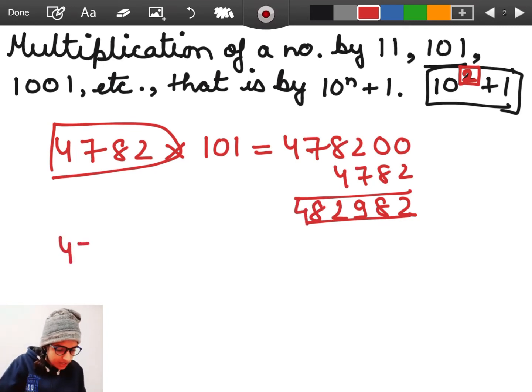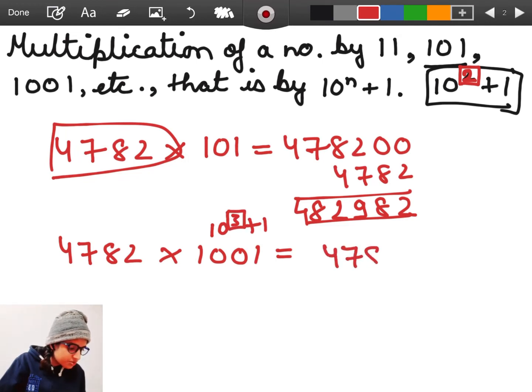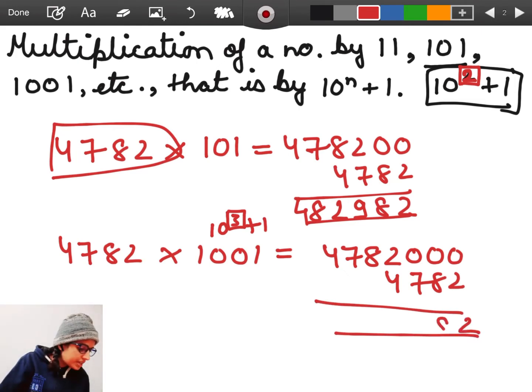Let's take another example. Let me multiply this same number by 1001. So here 1001 is 10 raised to the power 3 plus 1. Just focus on this power. It is 3. So we will add three zeros to this number and we will add the original number to it. 2, 8, 7, 6, 8, 7, 4 and that's the answer.